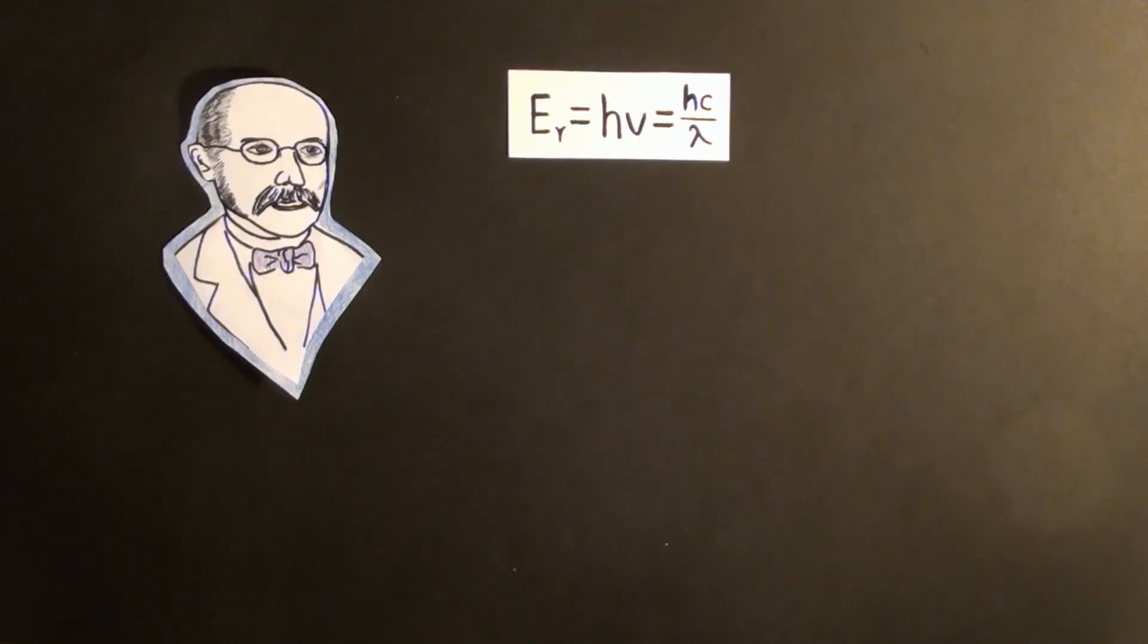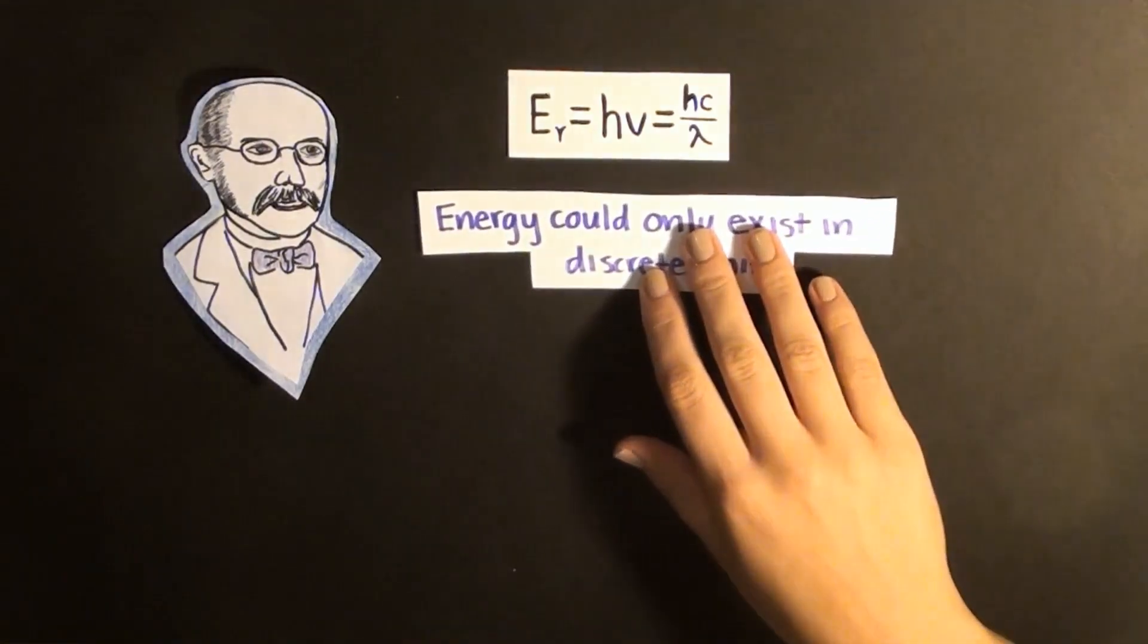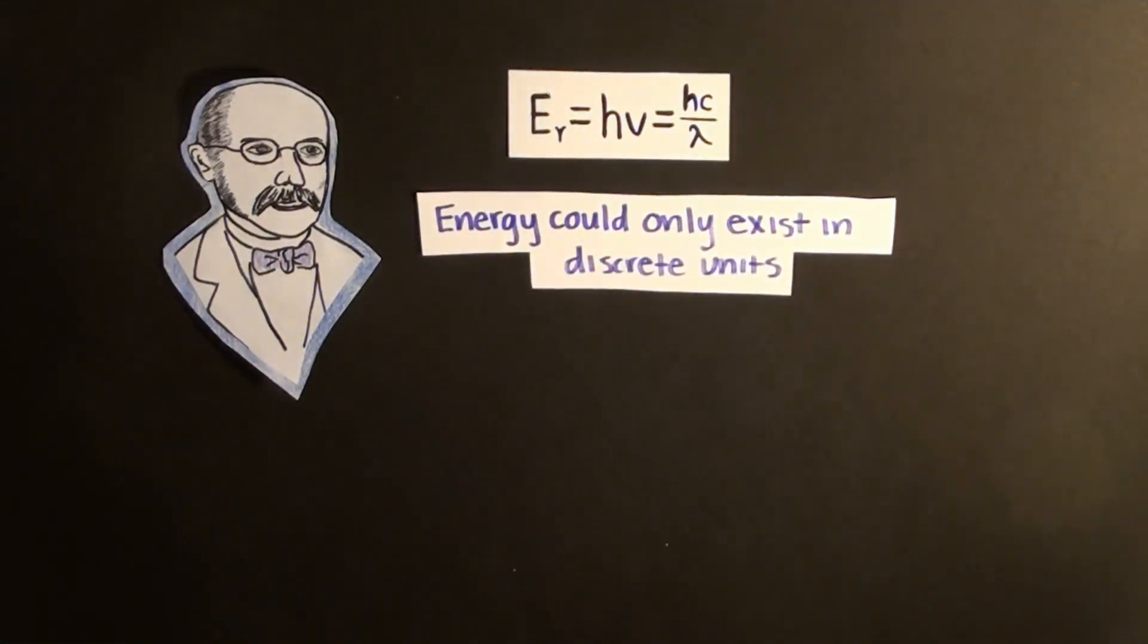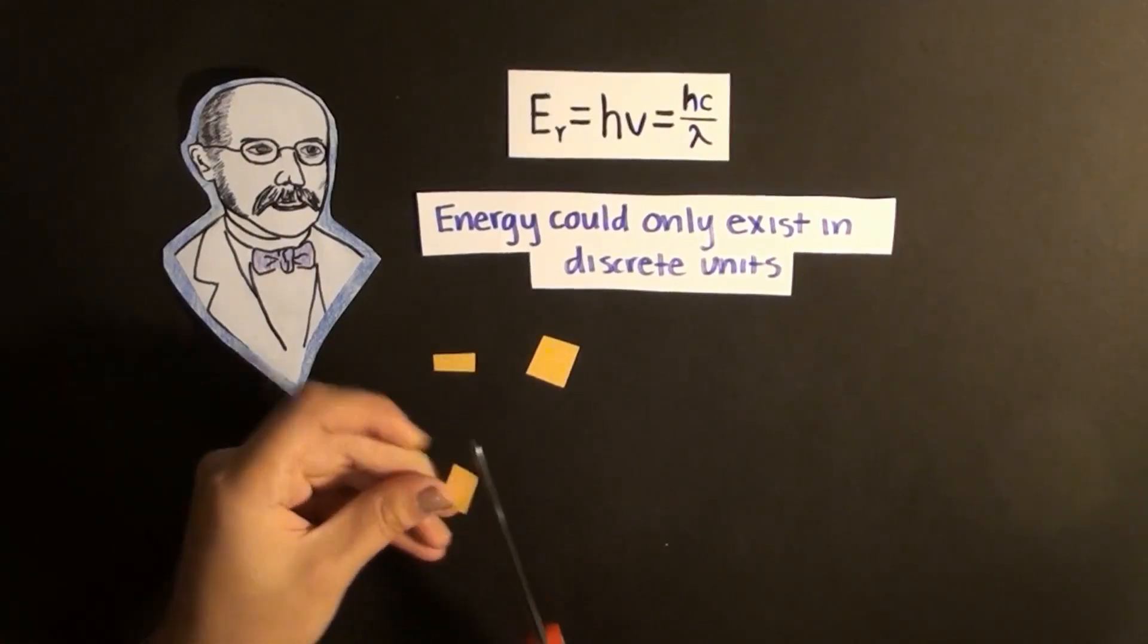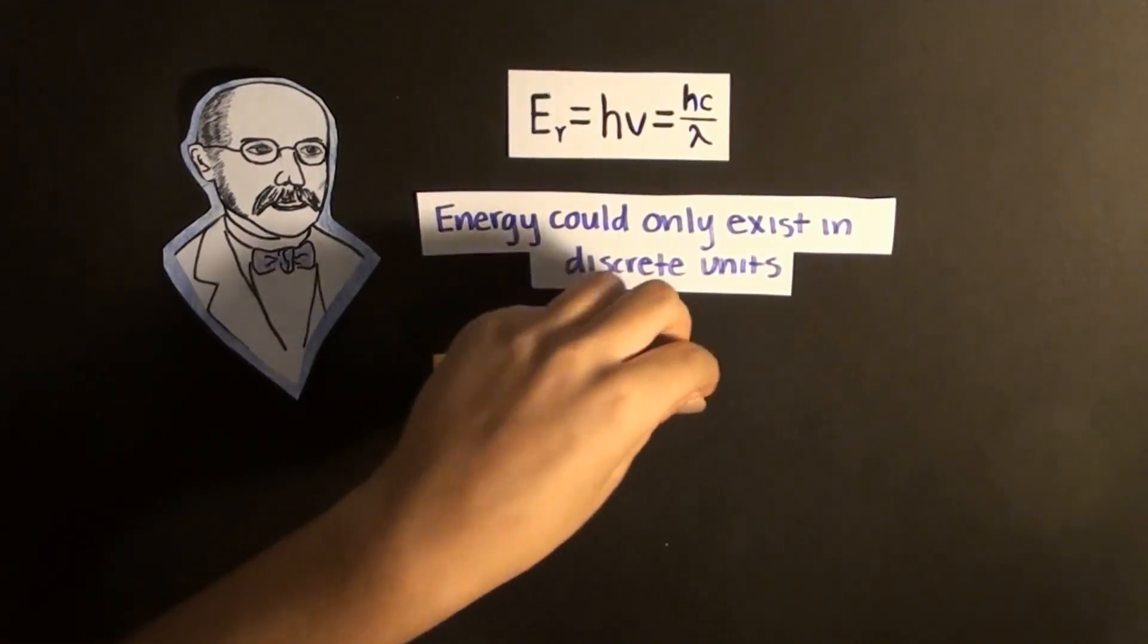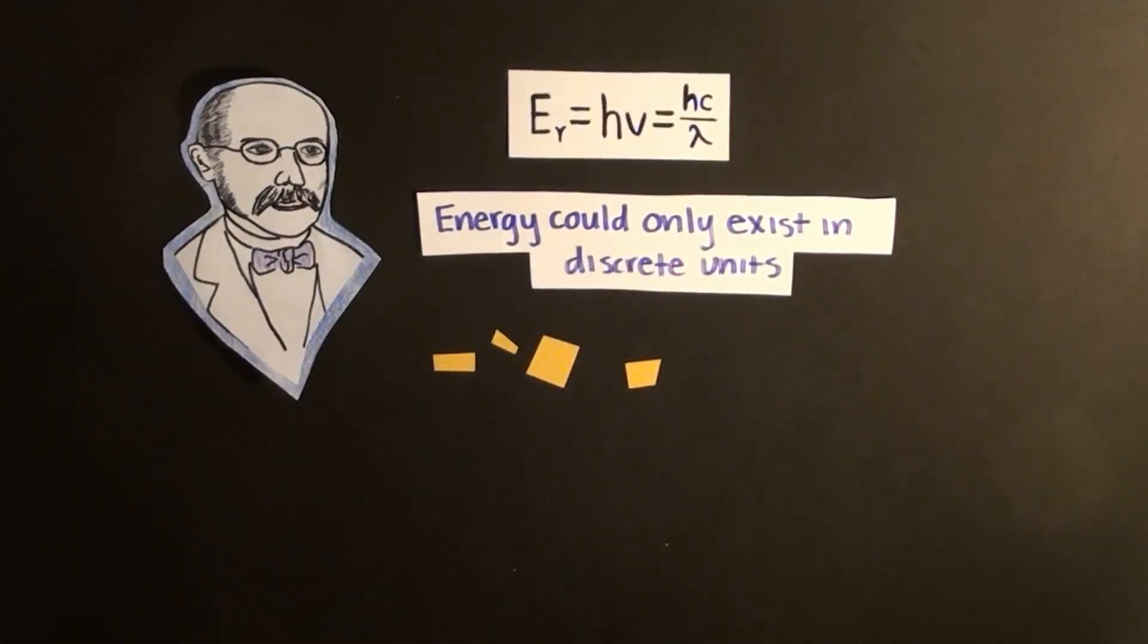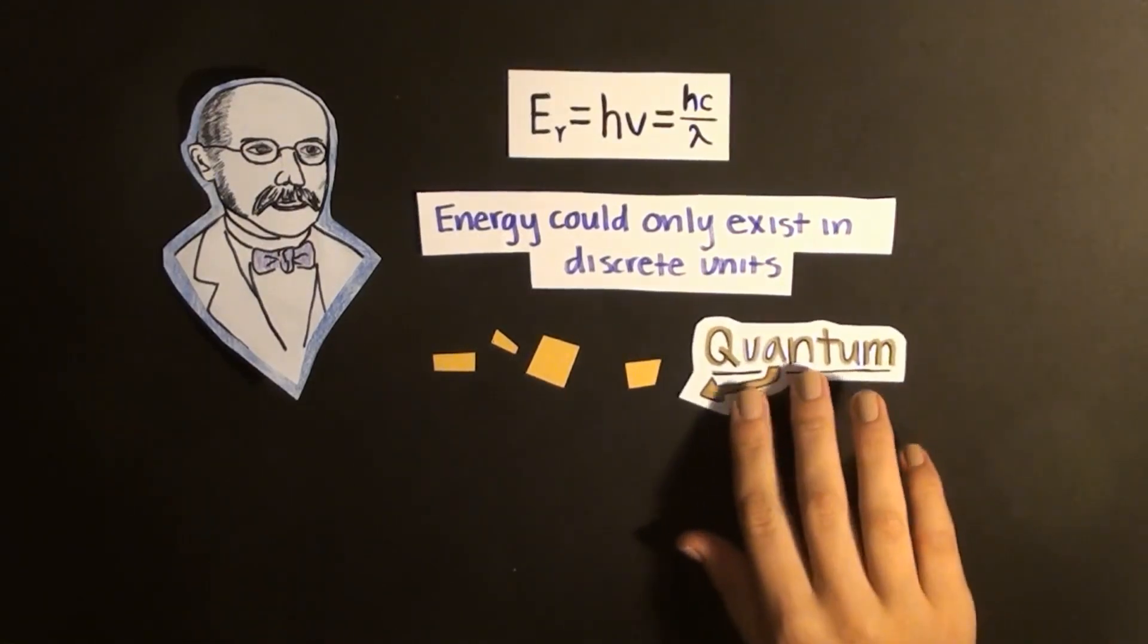Contrary to popular belief at the time, Planck's equation implied that energy could only exist in discrete units, much like matter, rather than arbitrary amounts. Said another way, you can divide a quantity of light energy in half over and over again until you reach a small chunk of energy that cannot be divided further. Planck called each of these chunks a quantum.